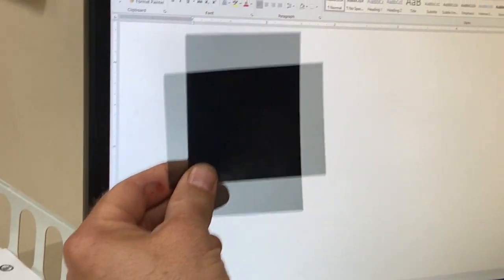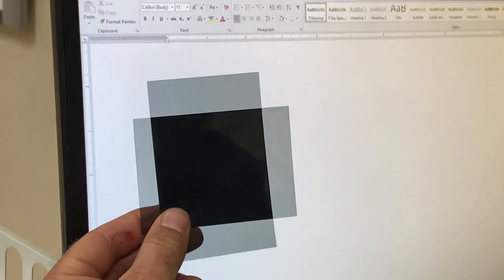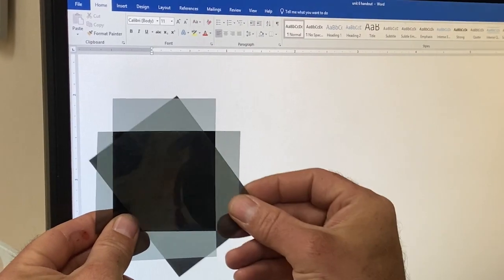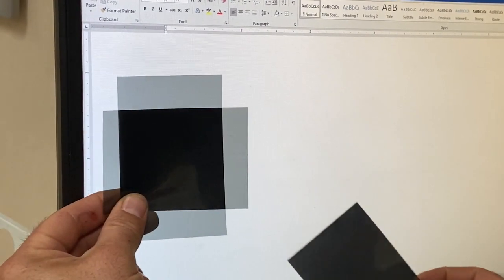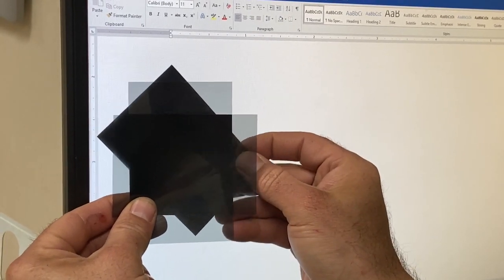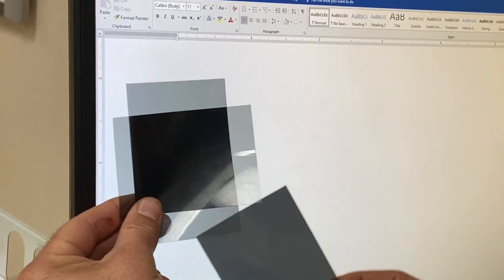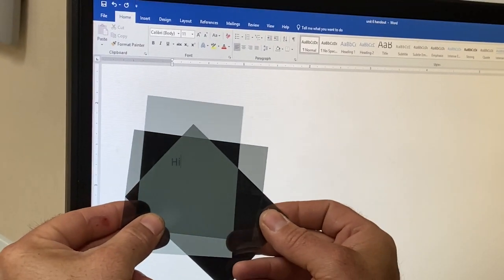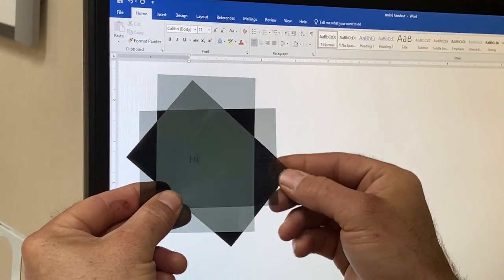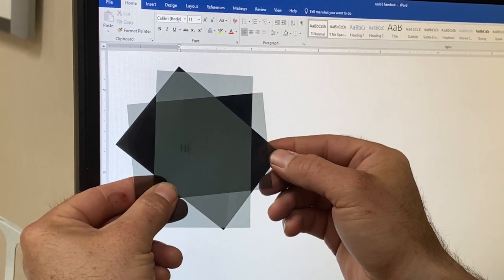Now, an interesting thing about polarizing filters is if I put something diagonal like this, either in front of both of them or behind both of them, you still can't see. But if I put it in between them, diagonal, it makes it so you can see.